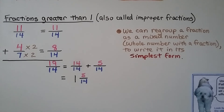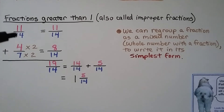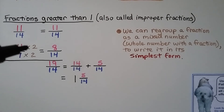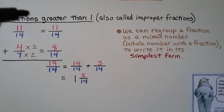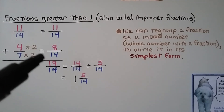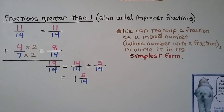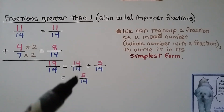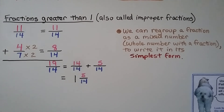Fractions greater than 1 are also called improper fractions. To add 11 fourteenths plus 4 sevenths, the 7 can meet 14 at 14, because 7 times 2 is 14. We multiply the numerator by 2 and get 8 fourteenths. Now we add 11 fourteenths plus 8 fourteenths: 11 plus 8 is 19, so we have 19 fourteenths. 19 fourteenths equals 14 fourteenths plus 5 fourteenths, meaning 1 whole and 5 fourteenths, which is 1 and 5 fourteenths.